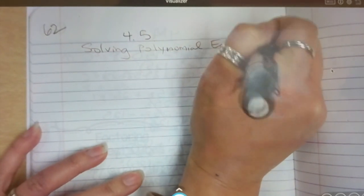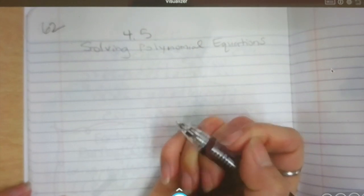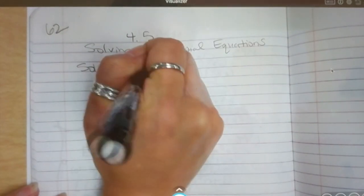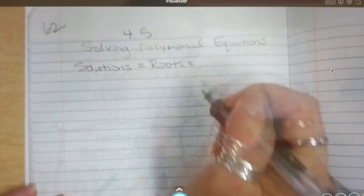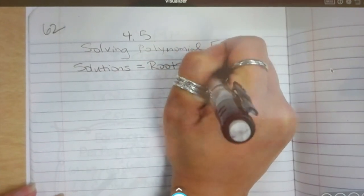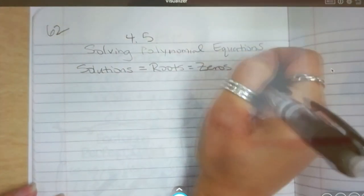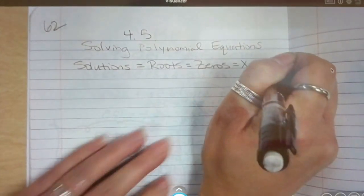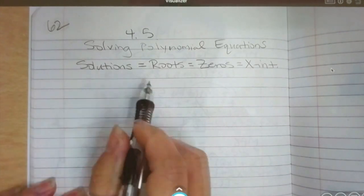Let's do a little bit of review. Here's one thing you guys need to know. In the directions, when it says find the solutions, that is the same exact thing as finding the roots, which is the same exact thing as finding the zeros, which is the same exact thing as finding the x-intercepts. It's going to be worded differently each time, so please make sure that you know that all of those are the same.